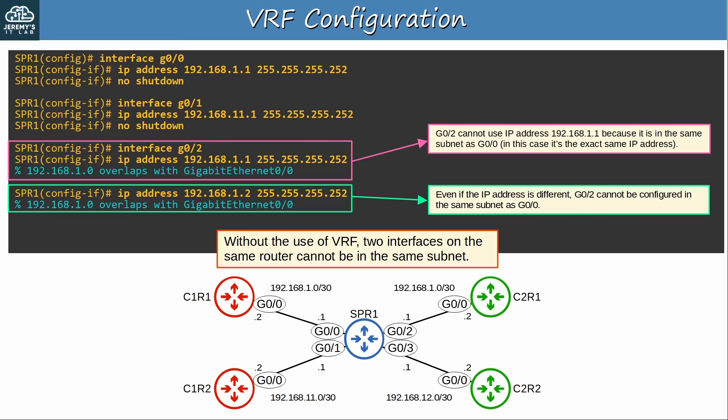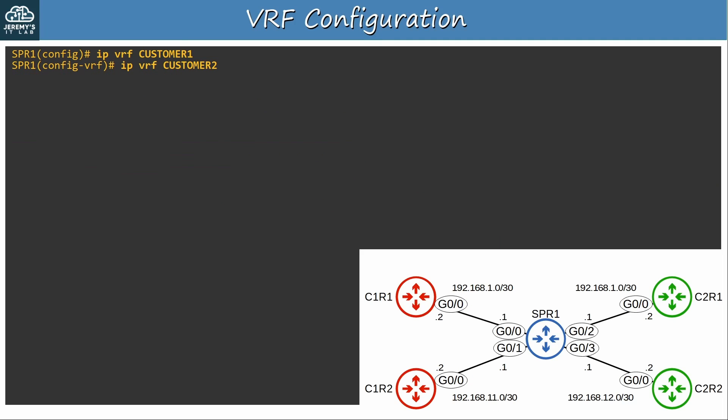Next let's use VRF to configure this network properly. First we have to create the VRFs, which can be done in global config mode with the command 'ip vrf' followed by the VRF name. Here I created two VRFs — one named customer1 and the other customer2. I then used the command 'show ip vrf' which shows all of the VRFs on the router, and the customer1 and customer2 VRFs were confirmed.